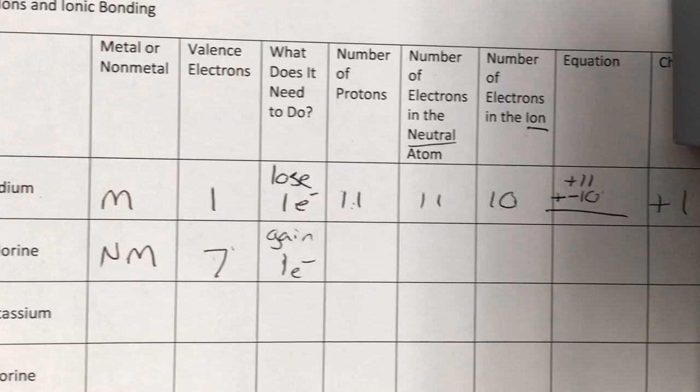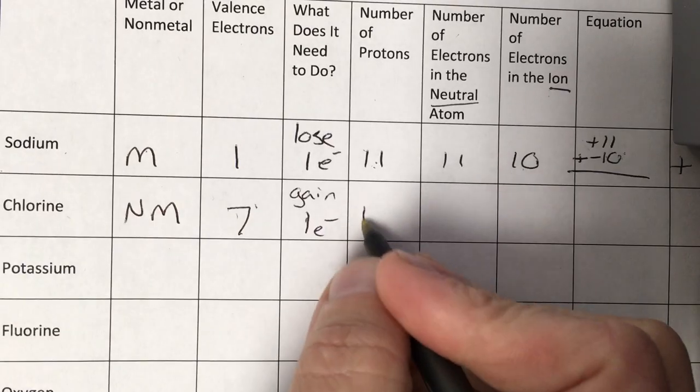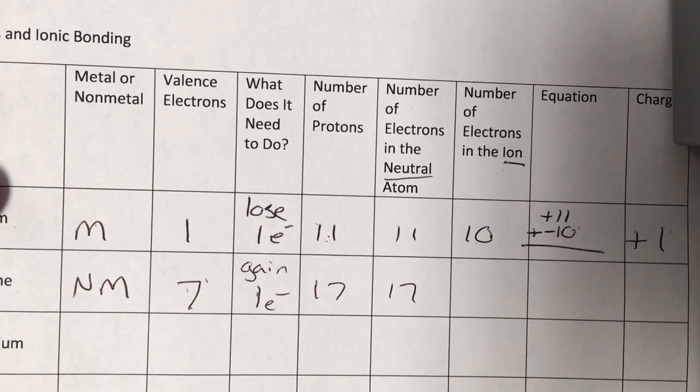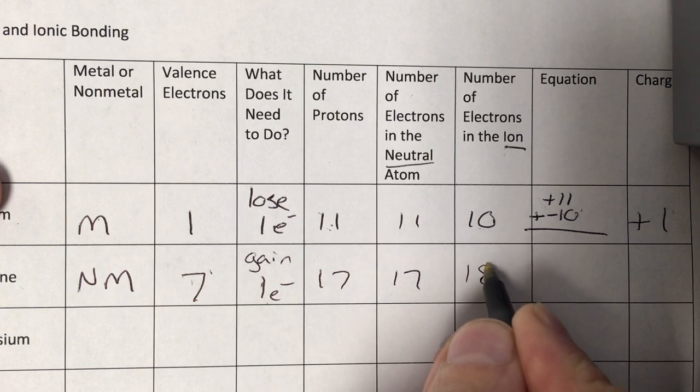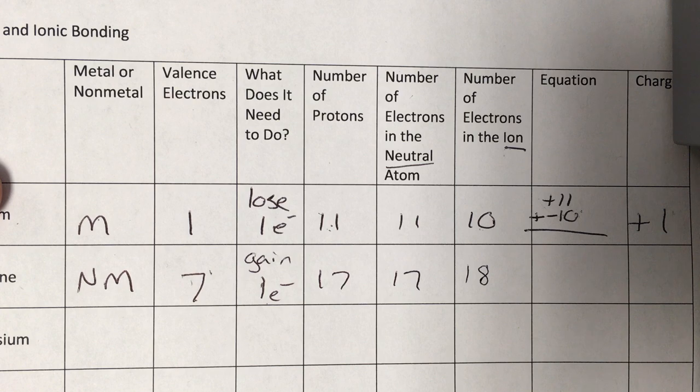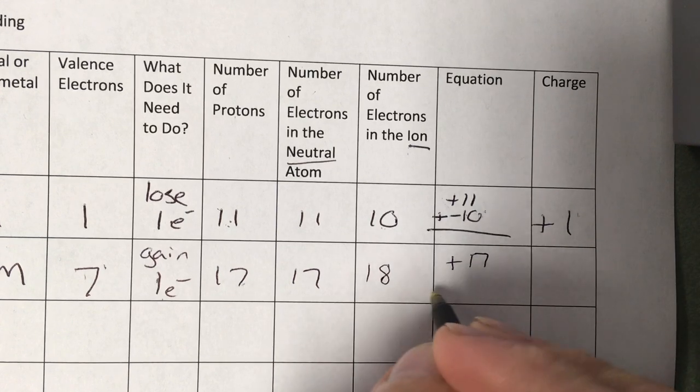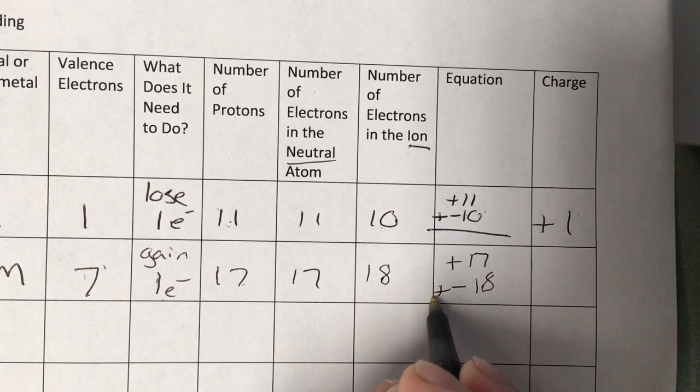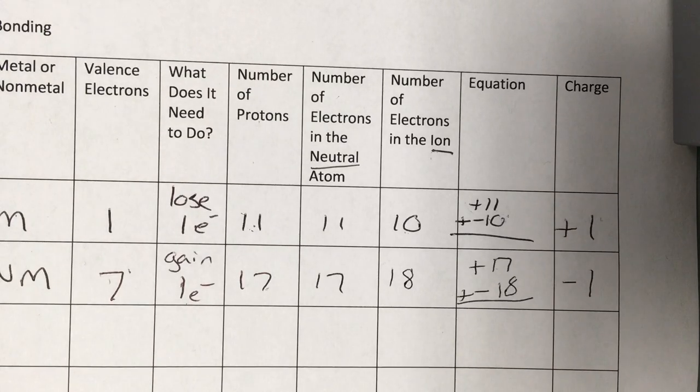Again, we've got to work out some atomic structure stuff. First, the number of protons. That's the atomic number, 17. In the neutral atom, we will also have 17 electrons, but that's about to change, because we're going to gain one, giving us 18 in the ion. Now for the charge math. Number of protons is the positive part, positive 17. For the negative part we're adding to it, it's right there under the ion, negative 18. Positive 17 plus negative 18 is negative one, the charge or oxidation number for chlorine.